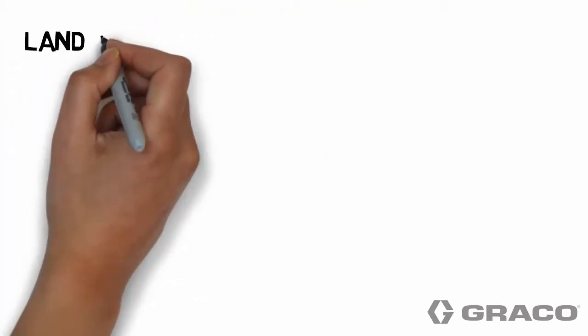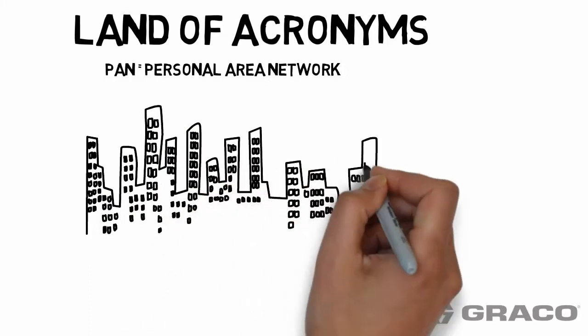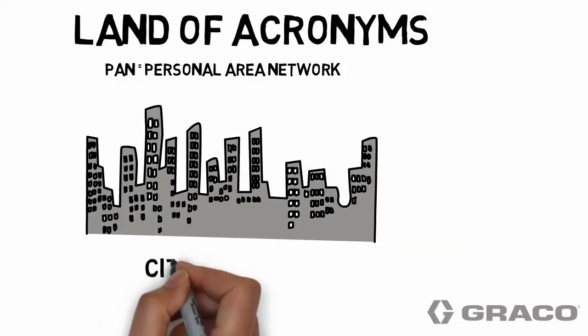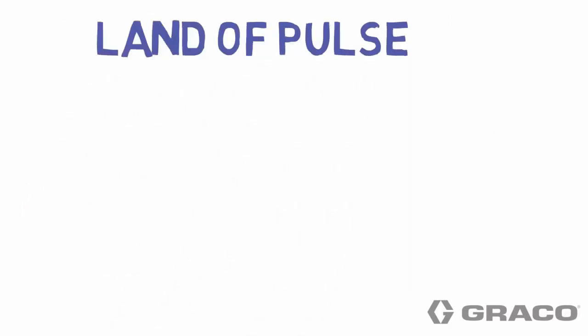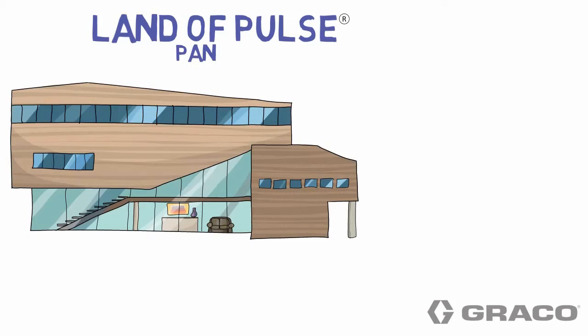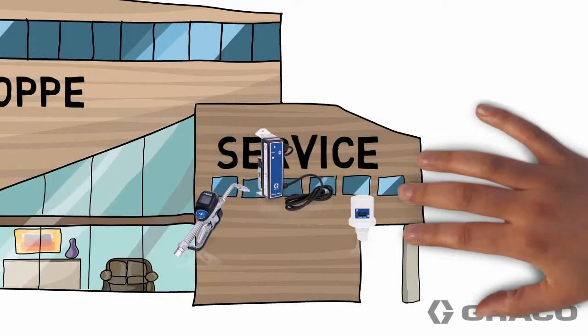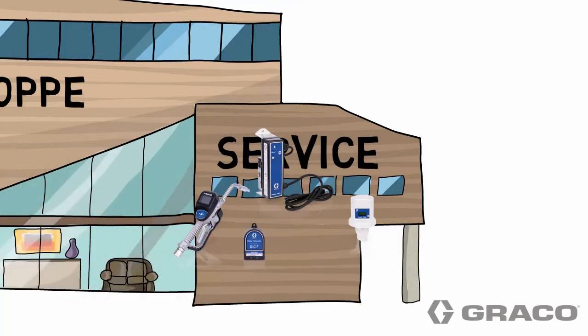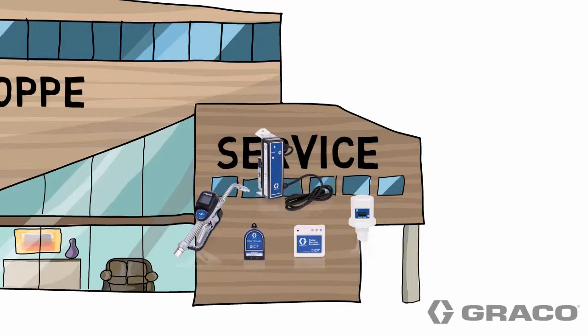Now back to the land of acronyms. Smaller than a LAN is a PAN. PAN stands for Personal Area Network — personal, even smaller than a country, like a city. These are short range and mainly used for low data rate applications. So in the land of Pulse, a dealership service area would have a PAN between Pulse components. To give the signal some oomph — and yes, oomph is a technical term — a component called an extender is used.